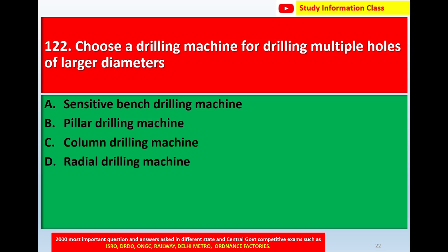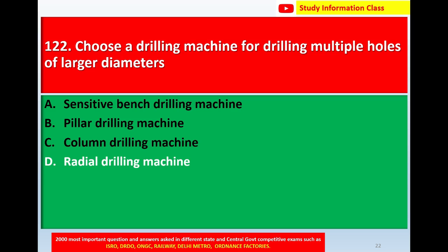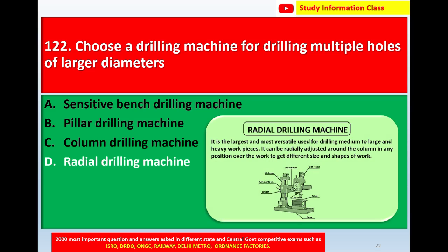Question number 122: Choose a drilling machine for drilling multiple holes of large diameters. Option A: Sensitive bench drilling machine, Option B: Pillar drilling machine, Option C: Column drilling machine, Option D: Radial drilling machine. The correct answer is Option D: Radial drilling machine.